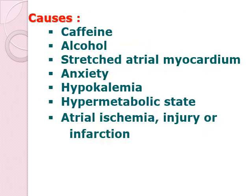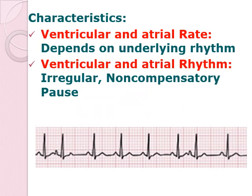What are the causes for premature atrial contractions? It could be caffeine, because caffeine can stimulate our electrical impulses. Alcohol also, stretching of the atrial myocardium, anxiety, hypokalemia, hypermetabolic state such as thyroid toxicosis or hyperthyroidism. Then you have atrial ischemia, injury, and infarction. Any of these conditions could cause your premature atrial contractions.